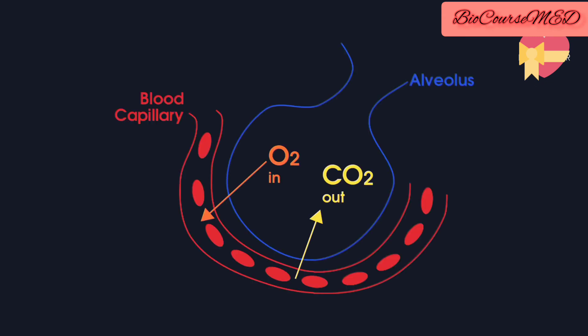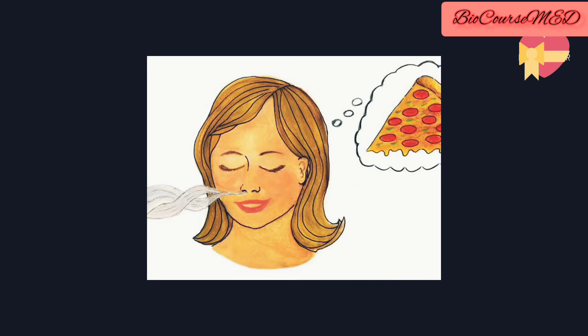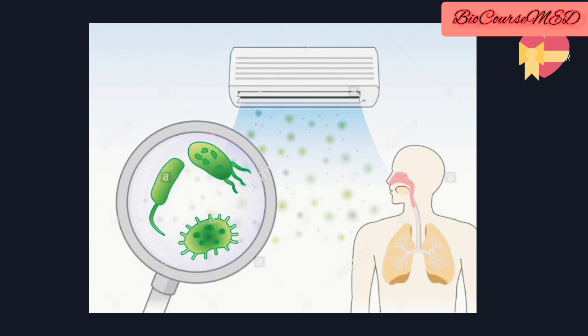The major functions of the respiratory system include gaseous exchange, as already discussed — oxygen and carbon dioxide make up the mechanism of gaseous exchange, and it involves breathing including movement of air. It also plays an important role in sound production, and it takes part in the sense of smell and protection, such as protection from dust and microbes entering the body through mucus production, cilia, and coughing.